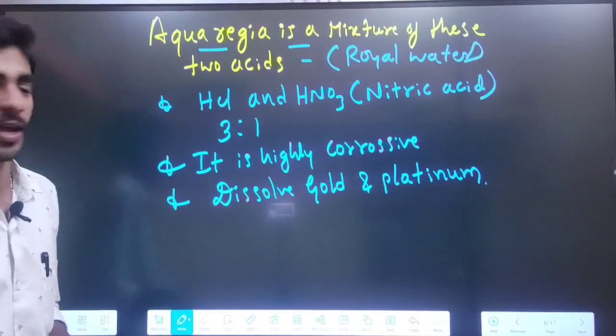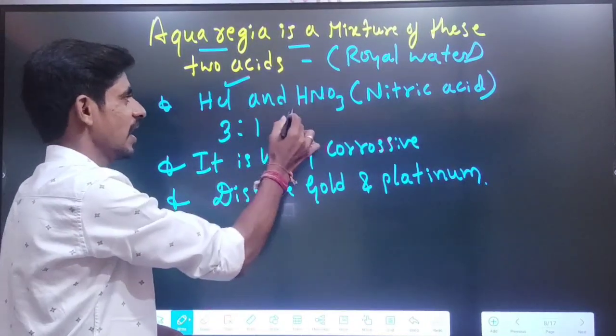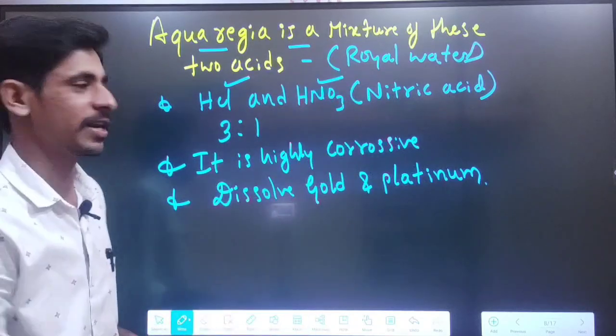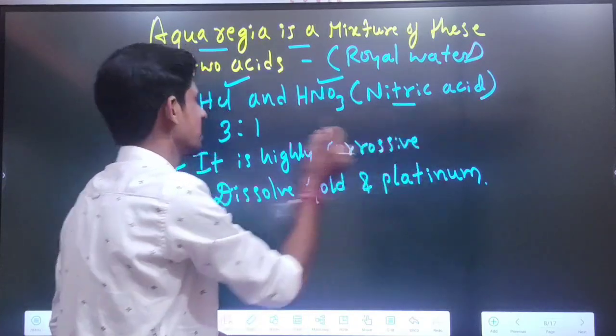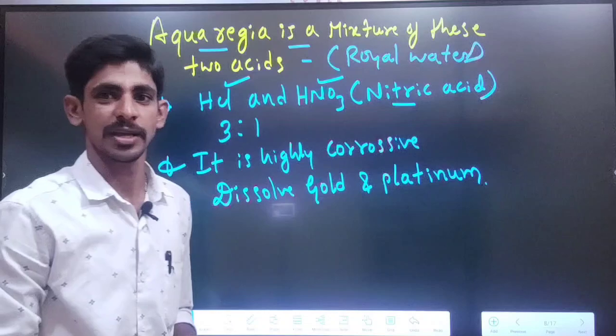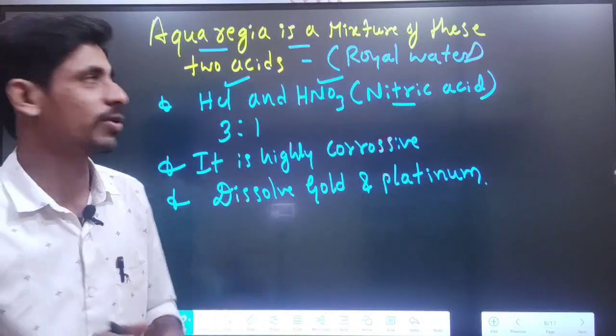So what is aqua regia? For example, HCl and HNO3. HNO3 is nitric acid, and HCl is hydrochloric acid. So aqua regia is the combination of these.